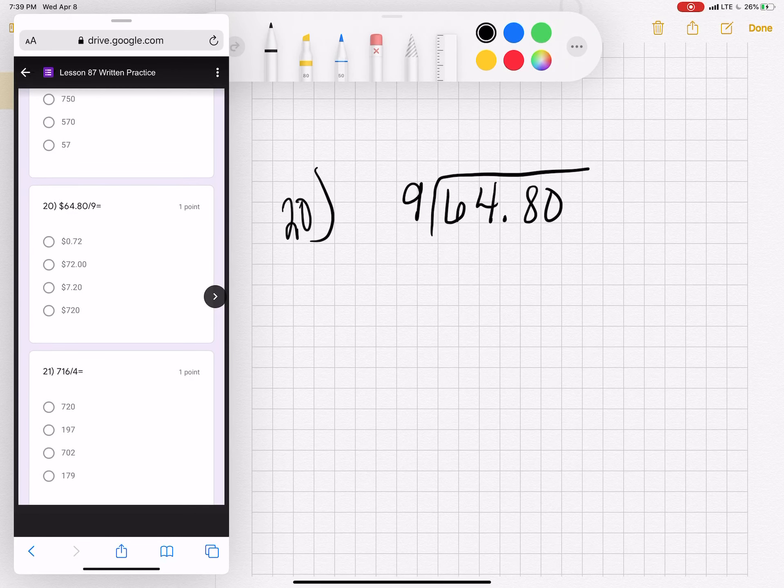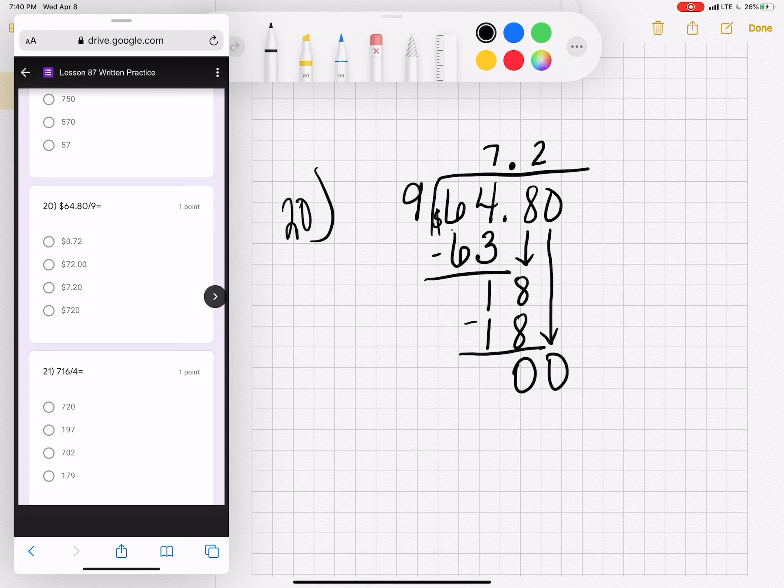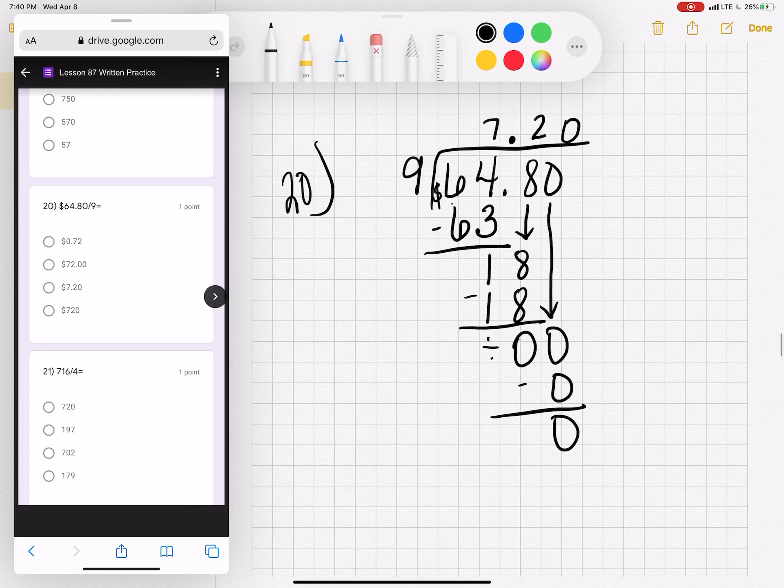Number twenty. Sixty-four dollars, eighty cents divided by nine. I bet you guys are at home yelling, You forgot your dollar sign! How many nines are in sixty-four? I know that nine times seven is sixty-three. Sixty-three minus sixty-four is one. Go ahead and put that decimal in your answer. Bring down your eight. How many nines are in eighteen? That works out perfect, because two times nine is eighteen. Subtract. And you have a zero. You're not done. Bring down your last digit, which is a zero. How many nines are in zero? That would be none. Zero times nine is zero. You have none remaining. And you guys are getting ready to yell at me again. Forgot my dollar sign.